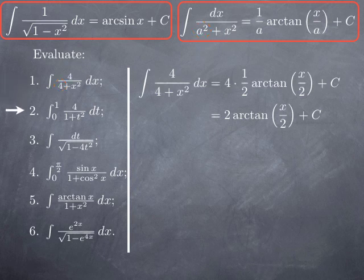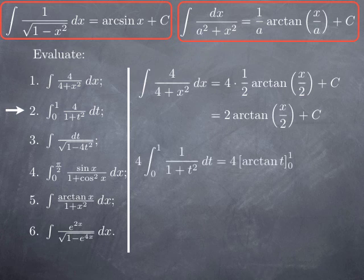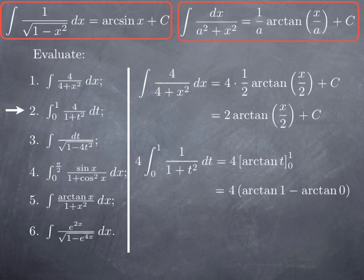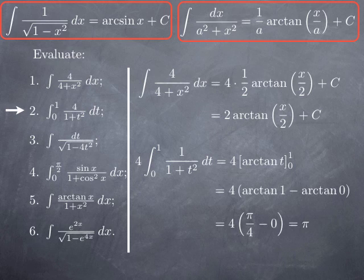For the definite integral from 0 to 1 of 4 over 1 plus t squared: that is 4 times the integral from 0 to 1 of 1 over 1 plus t squared. The antiderivative of 1 over 1 plus t squared is simply arctan t, so we evaluate 4·arctan t between 0 and 1. We get 4 times (arctan 1 minus arctan 0). Arctan of 1 is pi over 4, and arctan of 0 is 0, so we obtain 4 times pi over 4, which equals pi.